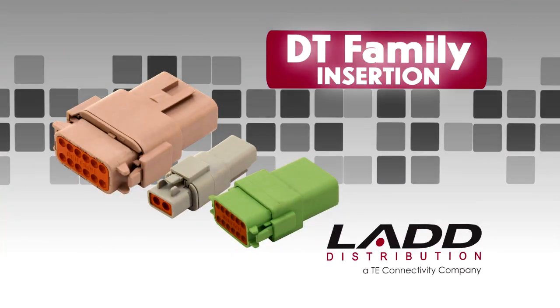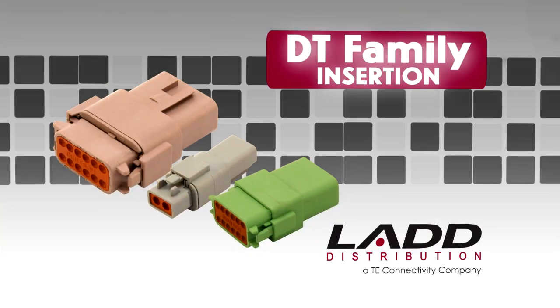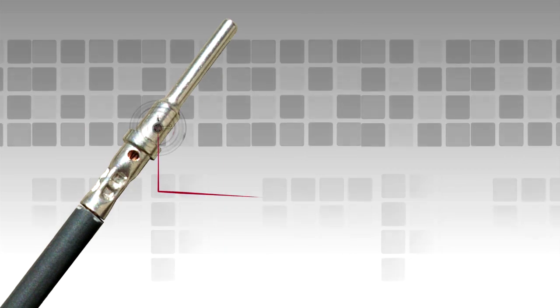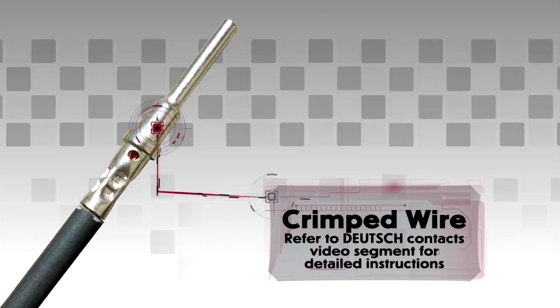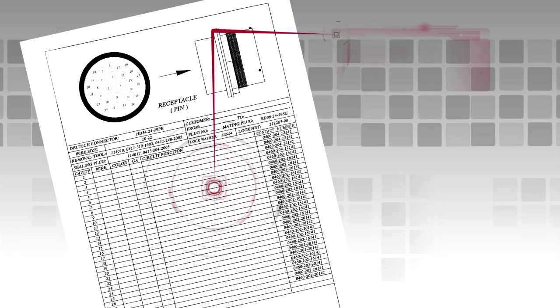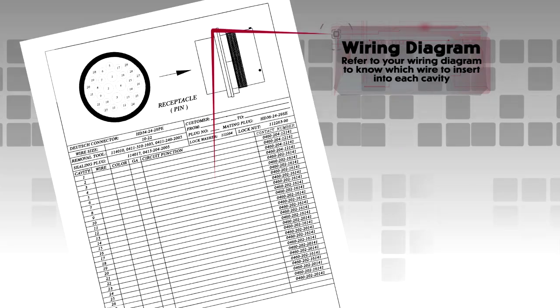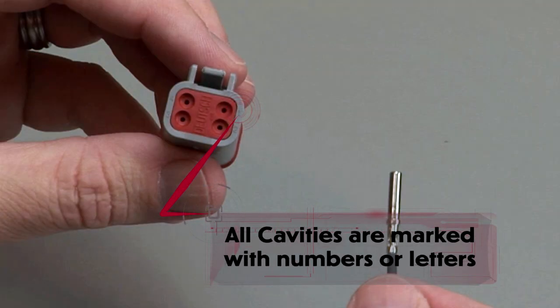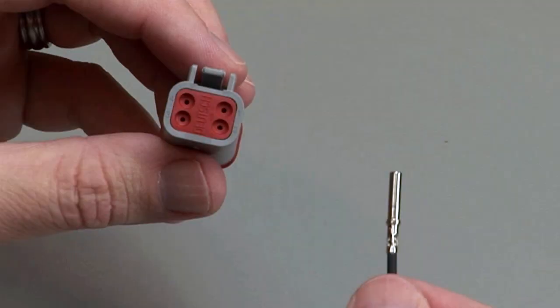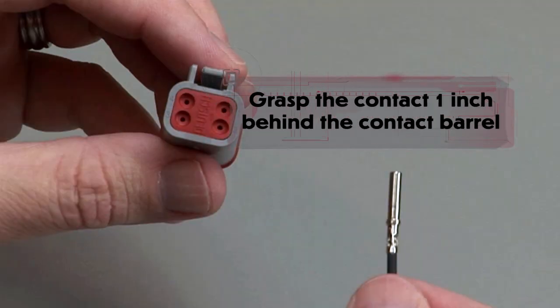DT contact insertion. Begin with a crimped wire. For assistance, refer to the Deutsch Contacts video segment for detailed instructions. Refer to your wiring diagram to know which wire to insert into each cavity. All cavities are marked with numbers or letters. Grasp the crimped contact approximately 1 inch behind the contact barrel.